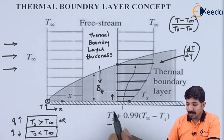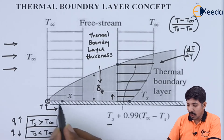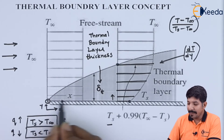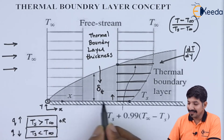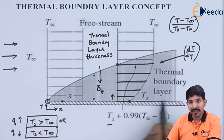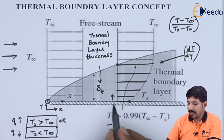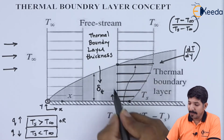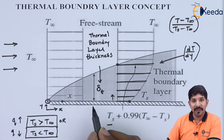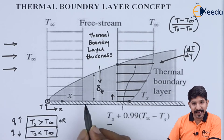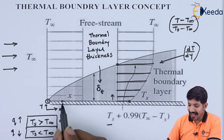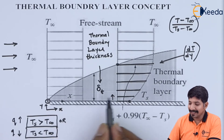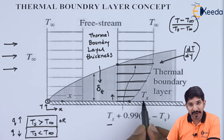One more thing to discuss is the laminar, the transition, and the turbulent layer. The profile of the thermal boundary layer will vary in the case of a laminar, transition, and turbulent layer.